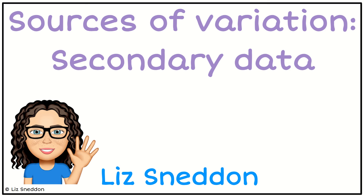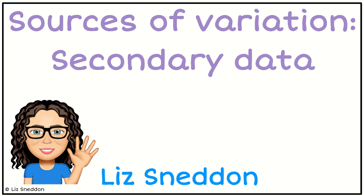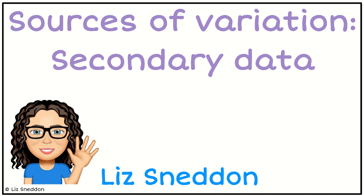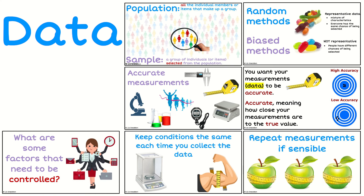Hi, I'm Liz Neddin. Let's have a look at sources of variation, particularly when we're talking about secondary data. Secondary data is data that someone else has collected, so we only have some metadata information about the data, and we've got to look into how the data was collected. Here are just a few of the slides to remind us about what we're looking for in data.